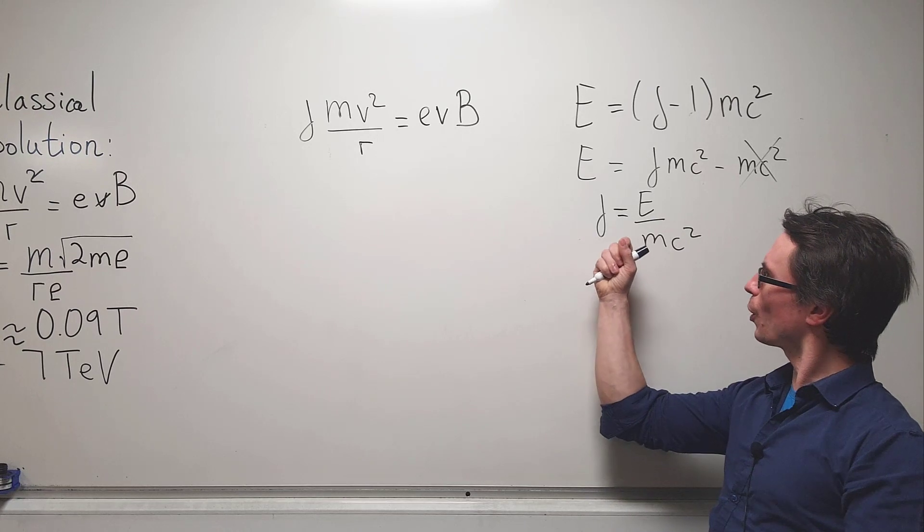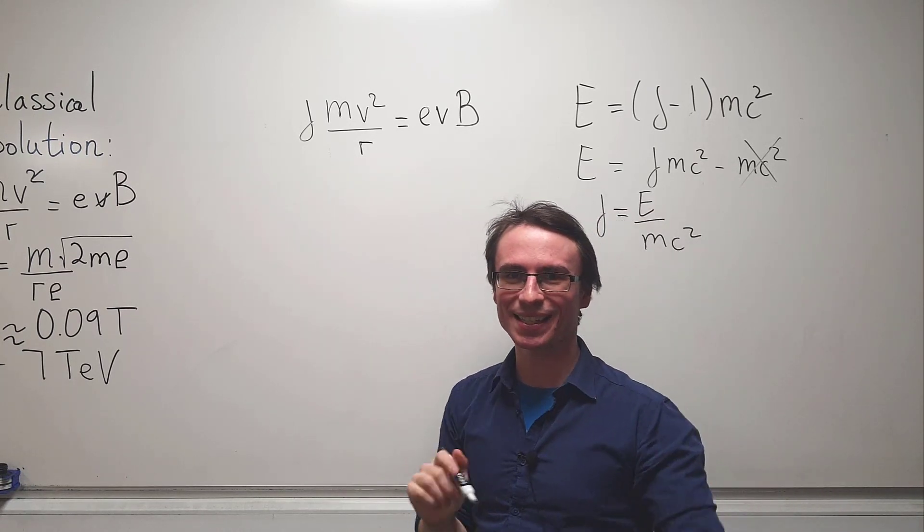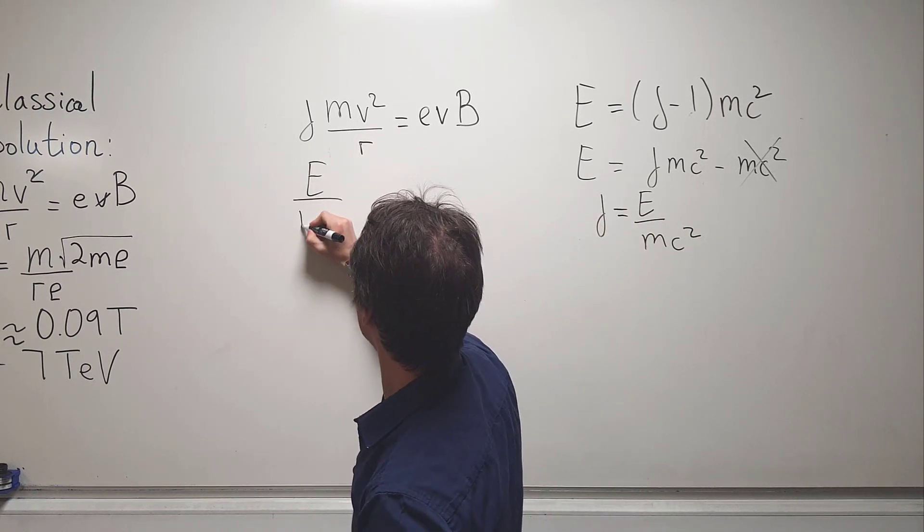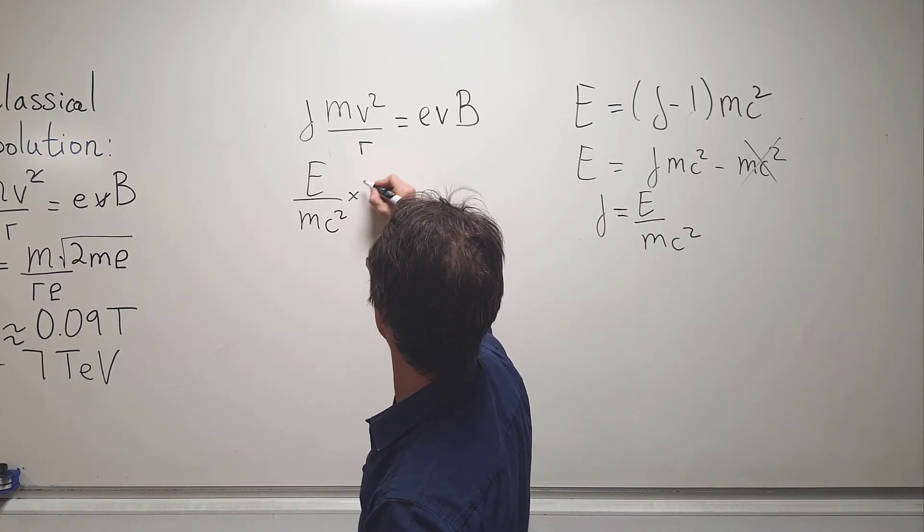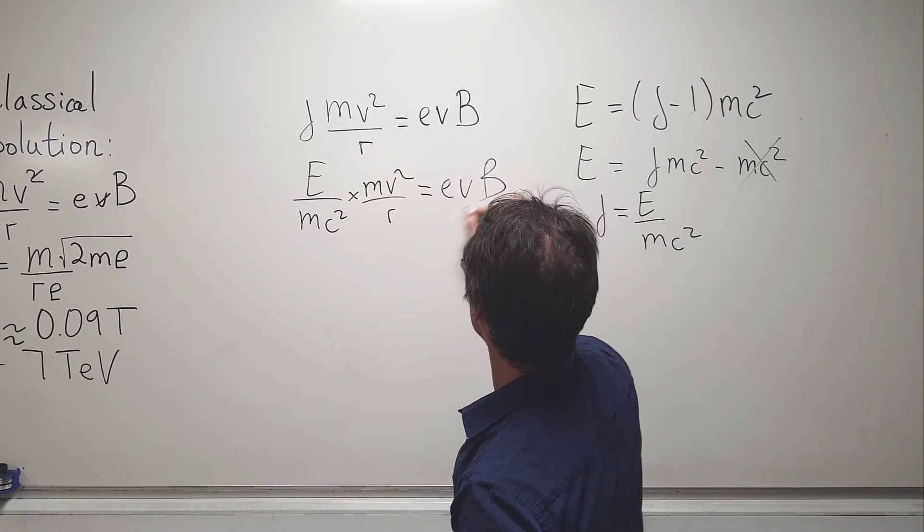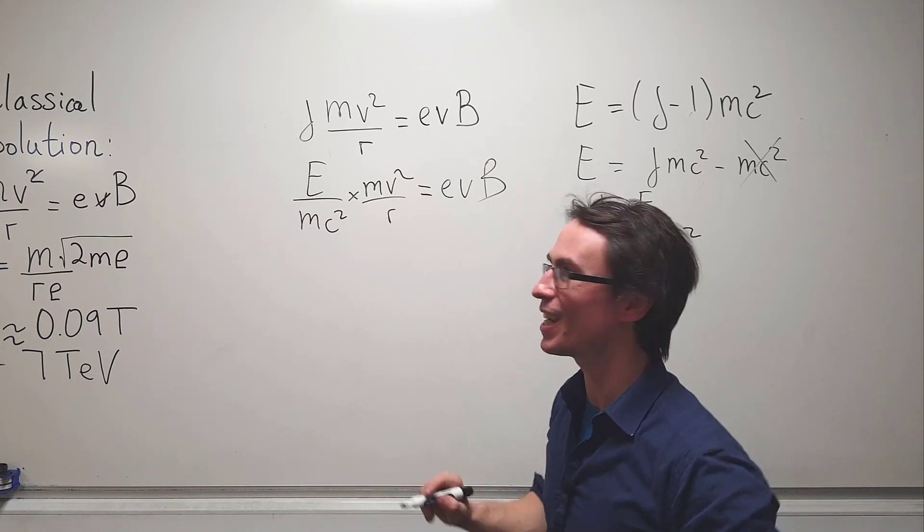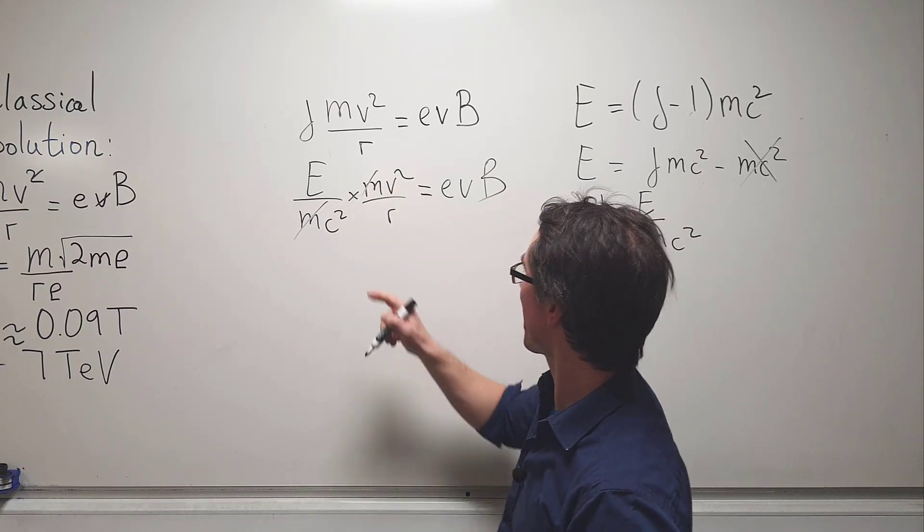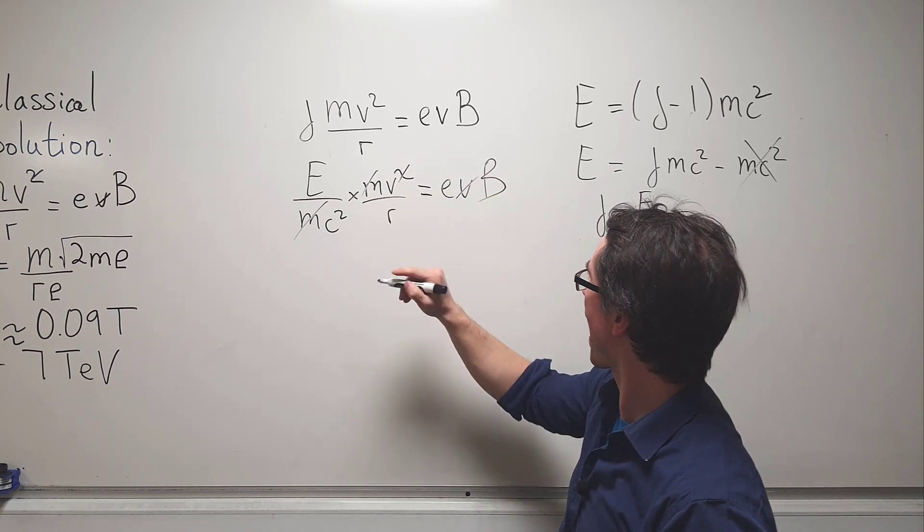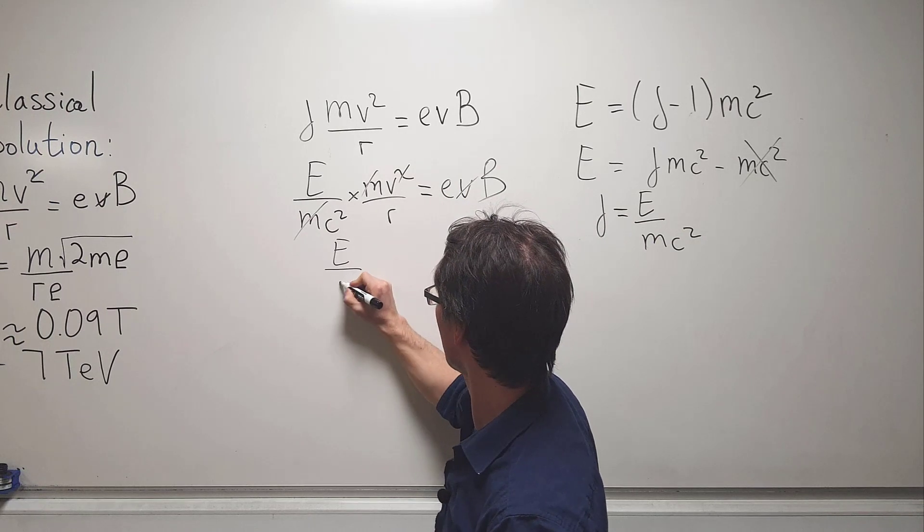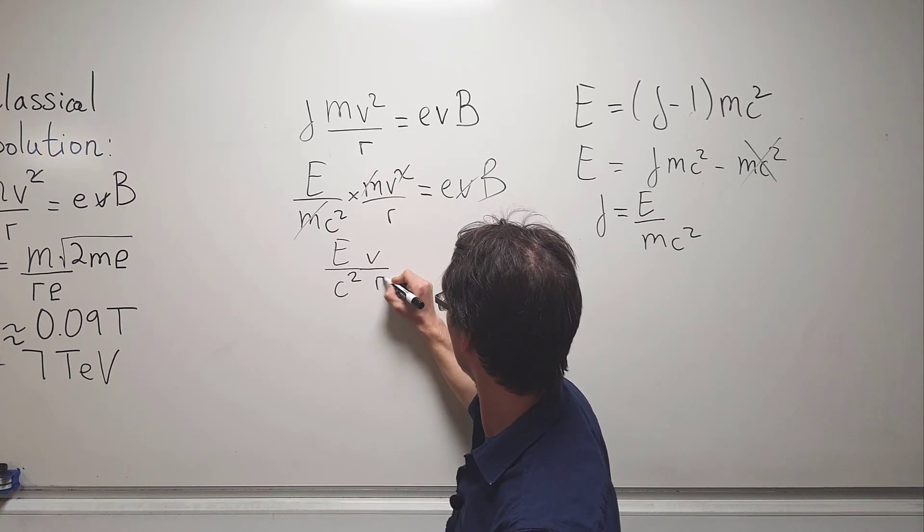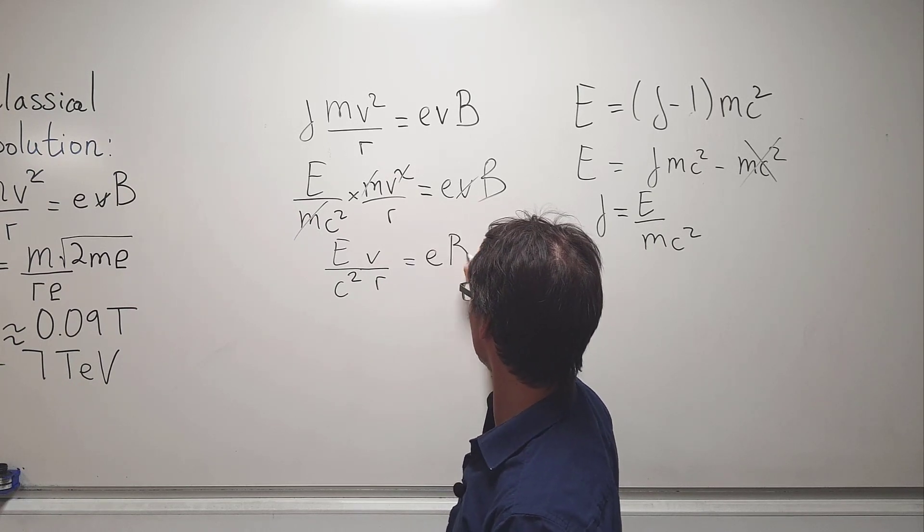Now what I'm going to do is take this expression and plug this into this formula here. What we're going to get is e over mc squared multiplied by mv squared divided by r equals evb. Now we can do some cancellations. First of all the mass is going to go, additionally this factor of v will go, and what we're left with is e over c squared times v divided by r equals e times b.